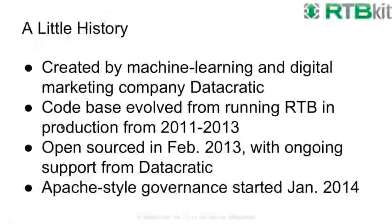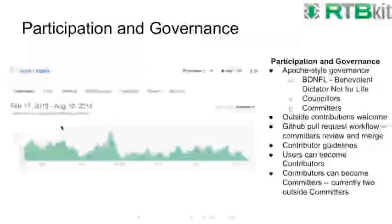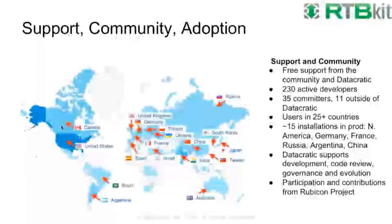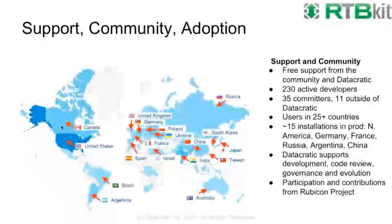The governance model allows anyone to be a contributor through a normal GitHub pull request workflow, and regular contributors are invited to become committers — in fact, another outside committer was just brought in this week. RTB Kit is being downloaded from about 50 countries around the world. There are an estimated 15 installations in production at this point, with customers using it in multiple countries in Europe and North America.